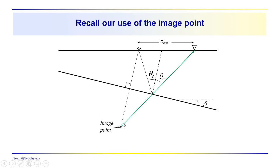We have the image point here, and we can see a triangle. The reflection path length — going from the source down to the reflection point and back to a receiver at the surface — is identical to the length of a line drawn from the image point to the receiver on the surface. That makes this an easy problem. When working with the horizontal layer, we took advantage of the image point to figure out the path length and travel time, and it simplified the math considerably.